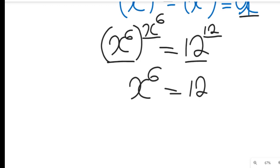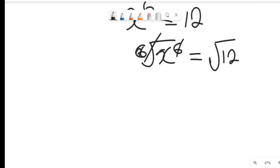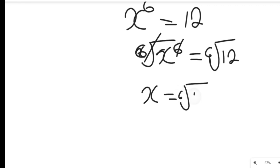Now we've arrived at this point. What do we do? We consider taking the 6th root of both sides — and that is absolutely correct. Taking the 6th root of both sides, the 6th root of x to the power of 6 equals the 6th root of 12. This clears the exponent and we have x equals the 6th root of 12, which can be written as 12 to the power of 1 divided by 6.